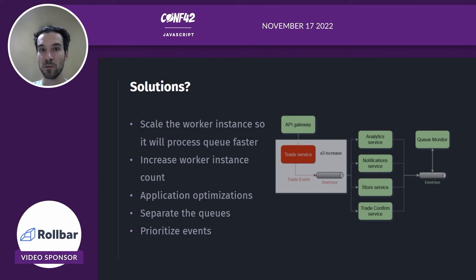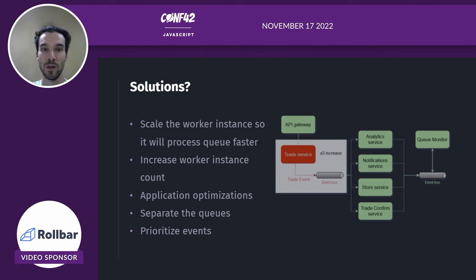Let's explore the options that we have to fix this. The first and most obvious is to scale the worker instance so it will go faster. In the Node.js world, this is rarely a good solution unless you are processing high CPU-intensive tasks such as video, audio, or cryptography. The second is to increase the worker instance count — this is a valid option, but sometimes not very cost effective. Next, we can think about application optimizations, which would include profiling, investigating database queries, and similar activities. This can be very time-consuming and can render no result or very limited improvements. Our last two options are where NestJS can help us: it's to separate the queues and prioritize some events.